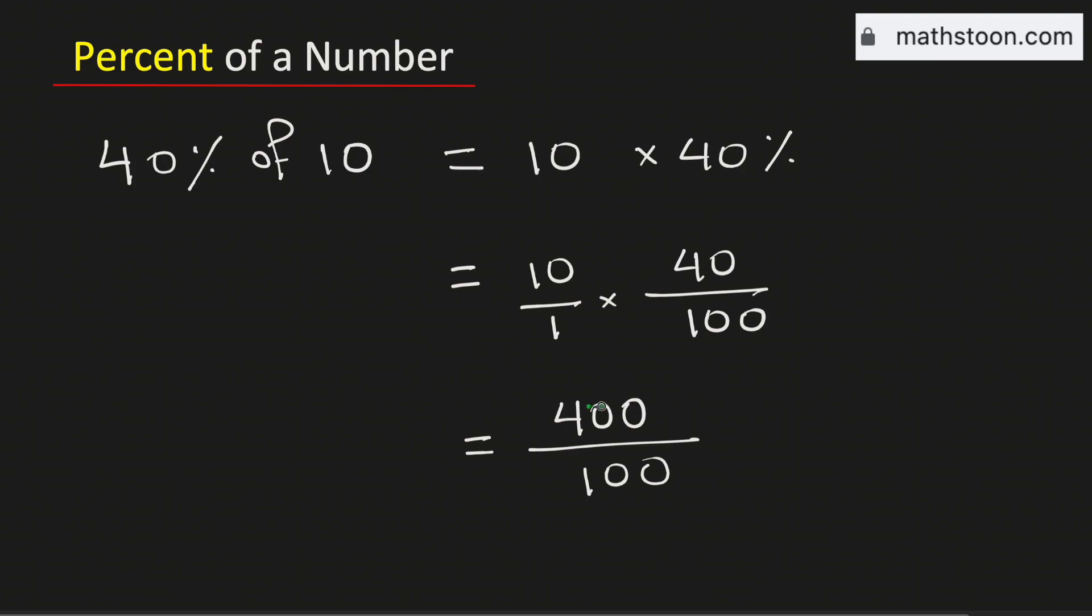Now cancel the common zeros. Therefore, it equals 4 over 1, which is the same as 4.